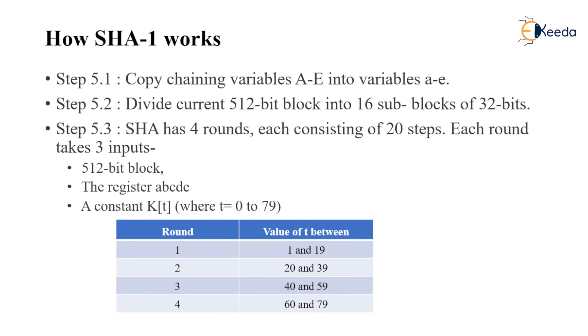In step 5 we have subparts. Step 5.1 is chaining variables A to E into small variables a to e, also called shift registers. Step 5.2 comprises dividing the current 512-bit block into 16 sub-blocks of 32 bits. Every 512-bit block will be divided into 16 sub-blocks.